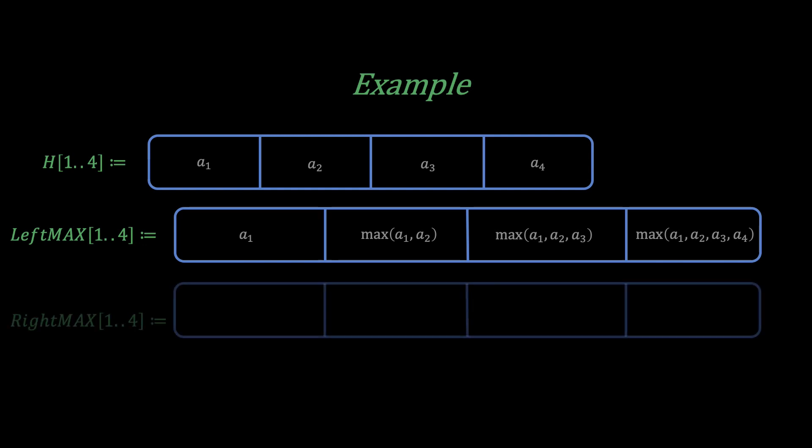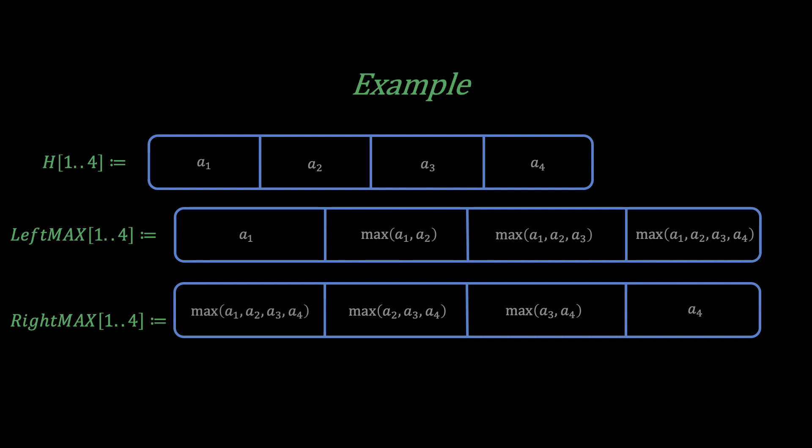Similarly, RightMAX[4] is the maximum of a4, RightMAX[3] is the maximum of a3 and a4, and so on. Now take a minute and think about how these values in LeftMAX and the values in RightMAX are related. If you spend enough time, I'm sure you would notice the pattern.